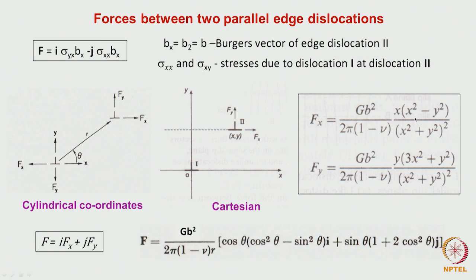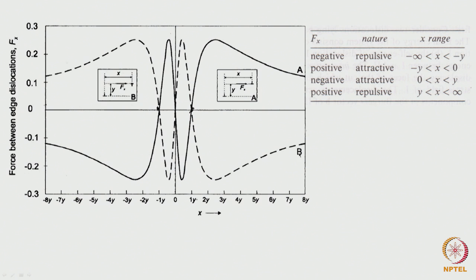Looking at the Fx expression directly: when x equals y, Fx becomes zero, because the numerator contains the factor (x² − y²). For x greater than y, x² − y² is positive — that is where the repulsive region exists. When x is less than y (y greater than x), x² − y² is negative — that gives the attractive region. This explains mathematically the oscillating force behavior seen between two edge dislocations as one moves along the slip plane.